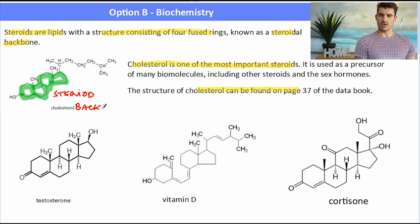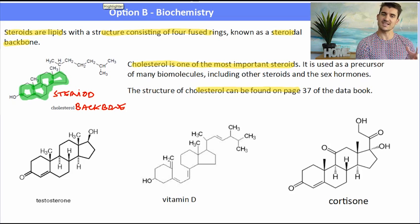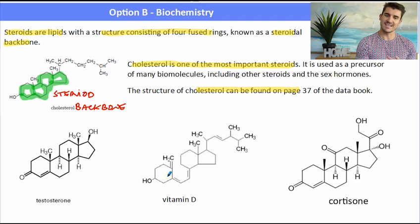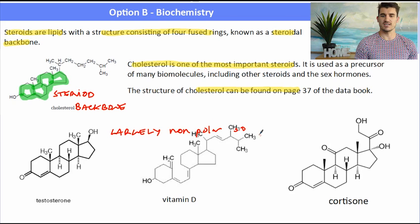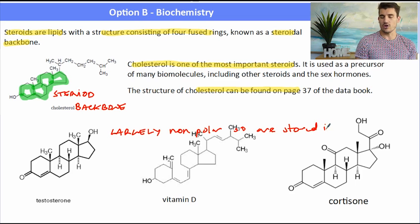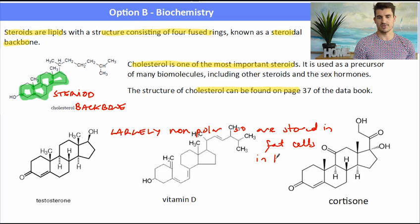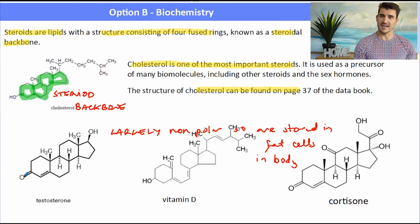The structure of cholesterol — you don't have to remember it, it's on page 37 of the data book. Testosterone has the same steroid backbone as cholesterol. Vitamin D is again similar except one of the links has been broken. Cortisone has the same sort of fused ring structure. If you look at these molecules, you'll notice they're largely non-polar — they only have dispersion force interactions or very weak ion-dipole interactions. So most of these compounds are not soluble in water and they're stored in the fat in the body.